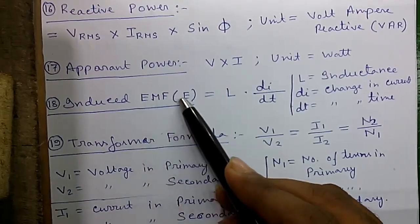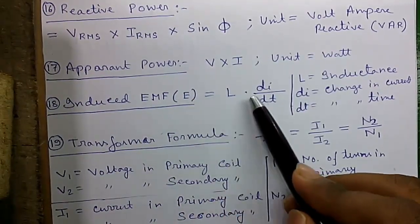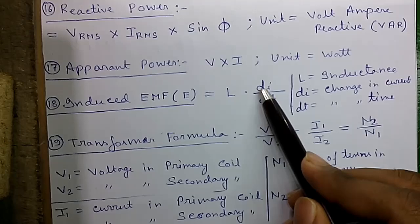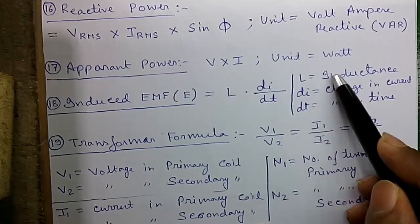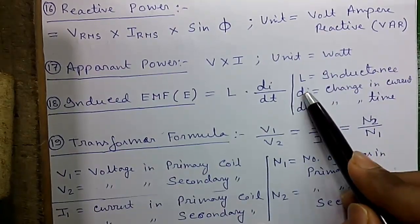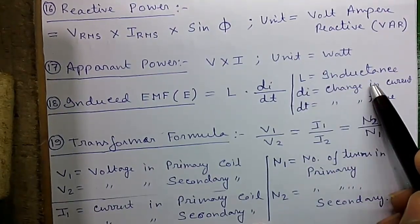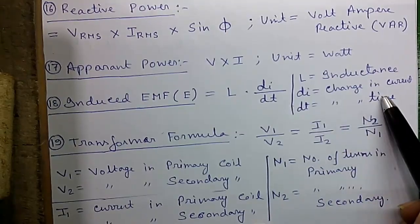Formula 18: Induced EMF, or E, equals L into del i by del t, or di by dt, where L is the inductance, di equals small change in current, and dt equals small change in time.